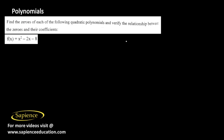Find the zeros of each of the following quadratic polynomials and verify the relationship between the zeros and their coefficients. We need to find the zeros of the polynomial f(x) = x² - 2x - 8.